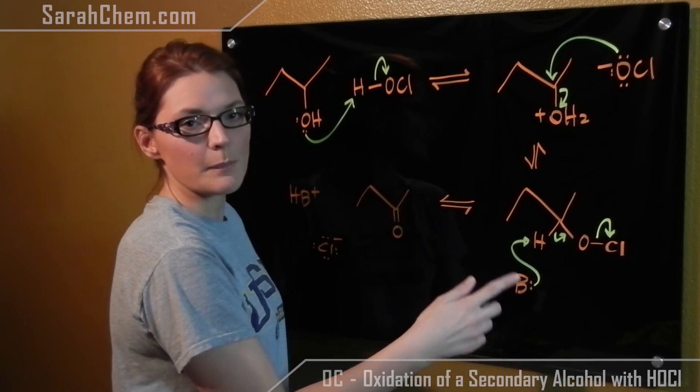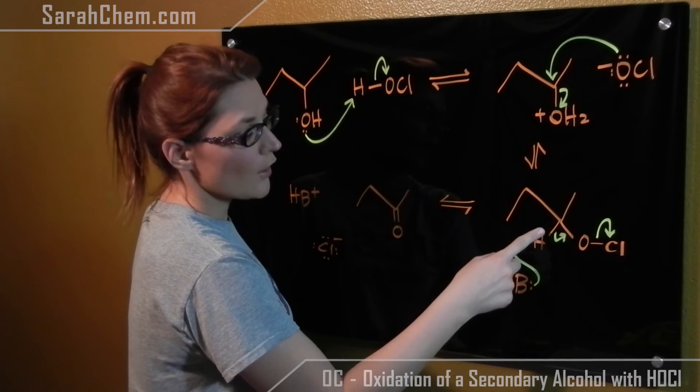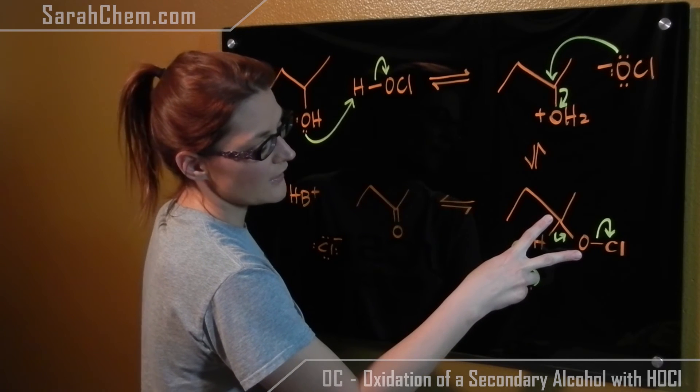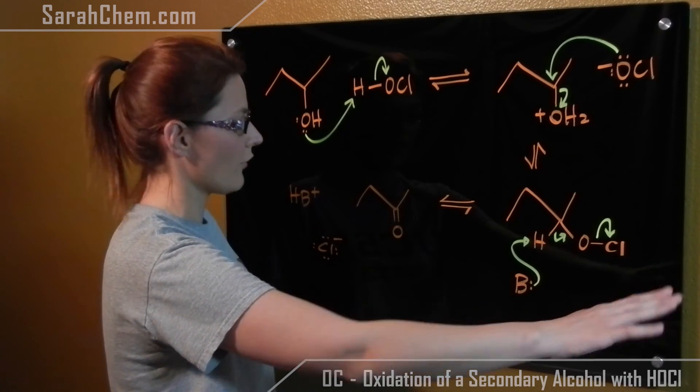Next an unspecified base in solution will come and it will take that hydrogen. Those electrons will now shift to form a double bond between this carbon and this oxygen. The formation of that double bond precipitates the chlorine group getting kicked off.